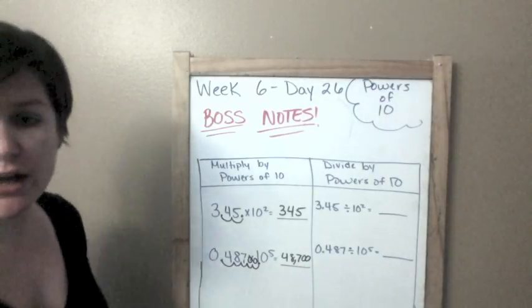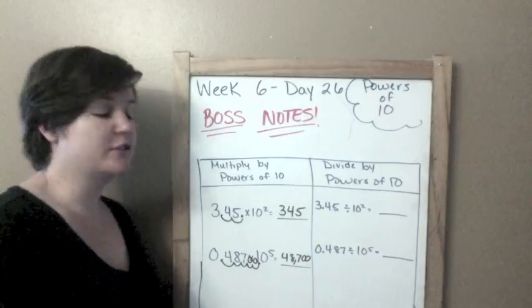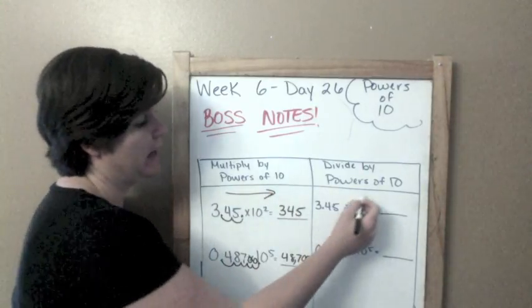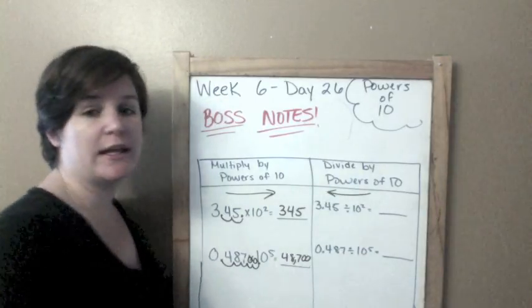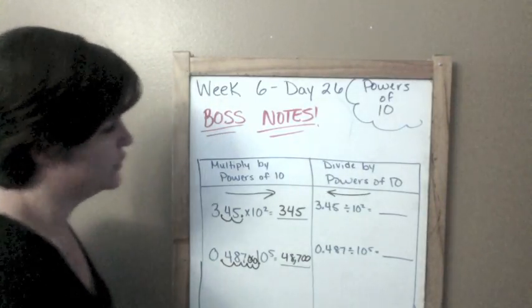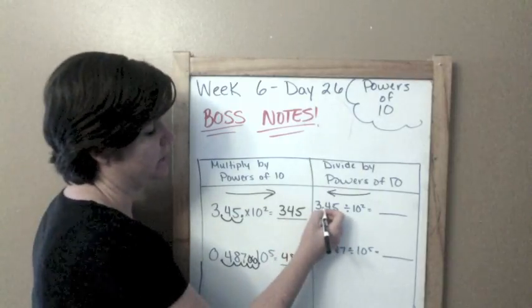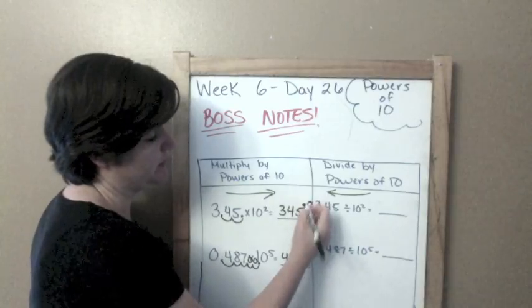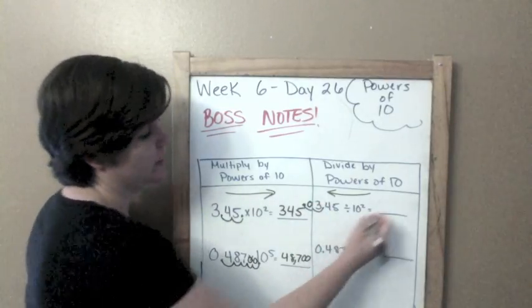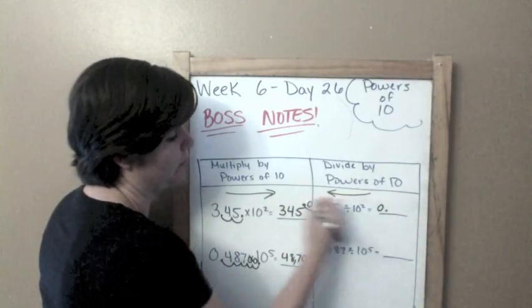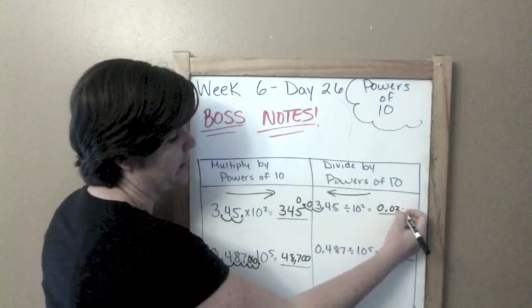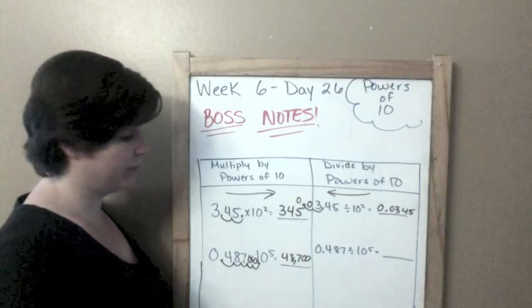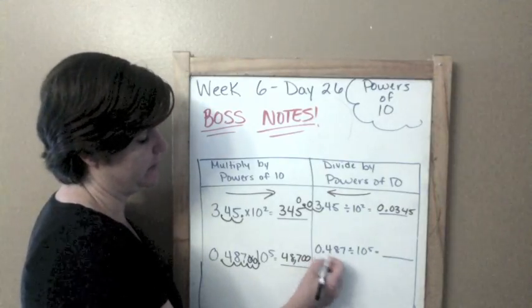For dividing by powers of 10, we're not going to the right, we're actually going to be moving to the left. If we're dividing by powers of 10, we're going to go to the left: one, two, put our decimal and put a zero to hold that space, so it'd be 0.0345.